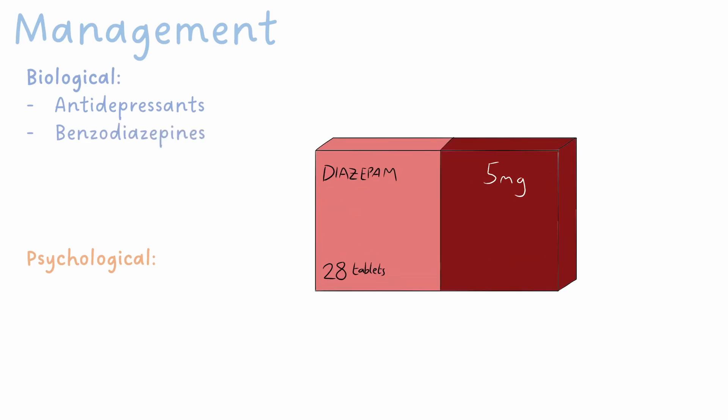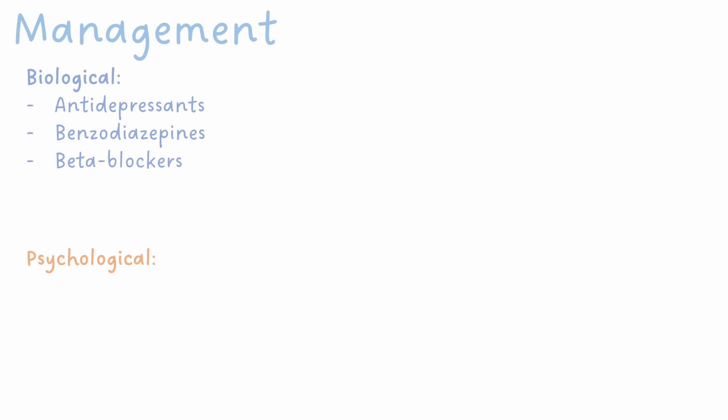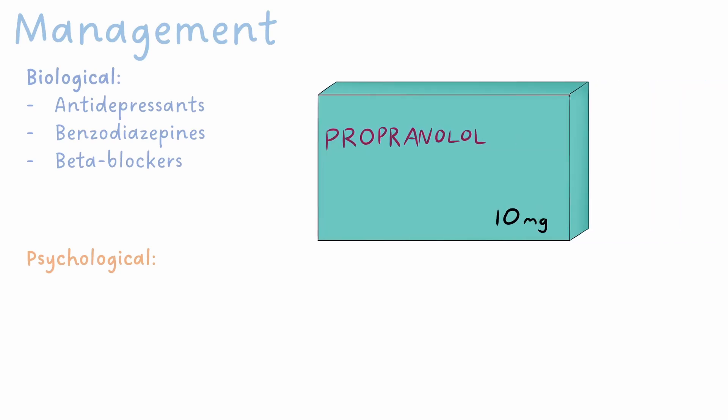Benzodiazepines are a class of drug that increases the effects of GABA in the central nervous system, giving a calming and sedating effect. Prolonged use of these should be avoided due to common side effects such as reduced alertness and confusion, and it's also common to experience withdrawal symptoms after stopping prolonged use. Beta-blockers are a class of medications most commonly known for managing cardiac conditions and hypertension. However, they can have a role in managing the physical symptoms of anxiety — propranolol, for example, is indicated for palpitations, sweating and tremor when they are symptoms of anxiety.